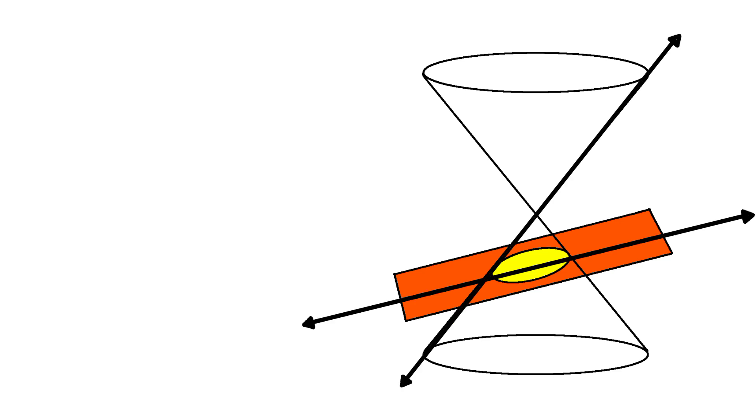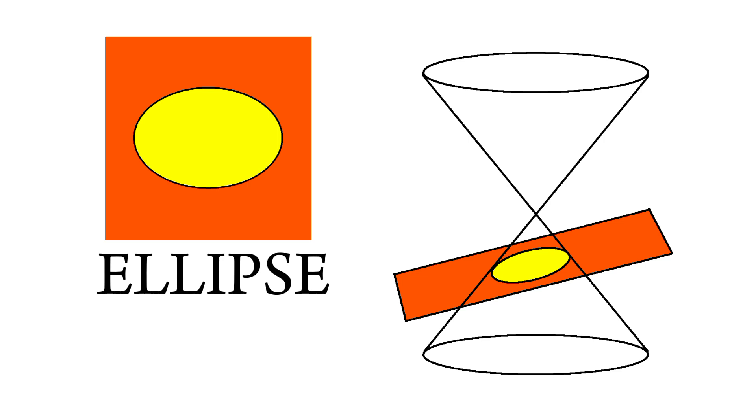than the slope of the cone, you could create an ellipse. This shape has an eccentricity between zero and one.